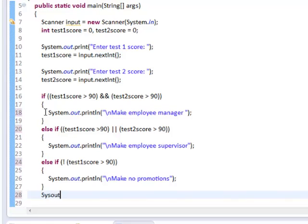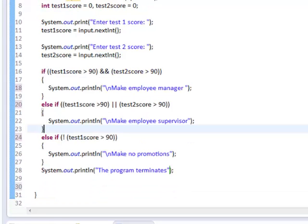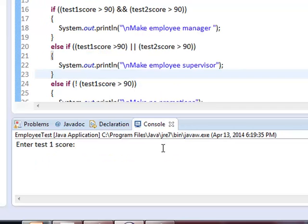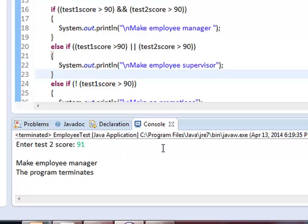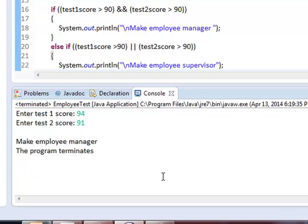We notify the user the program terminates. Let us save and run. Let us say our first score is 94, and the second is 91. Make employee manager.